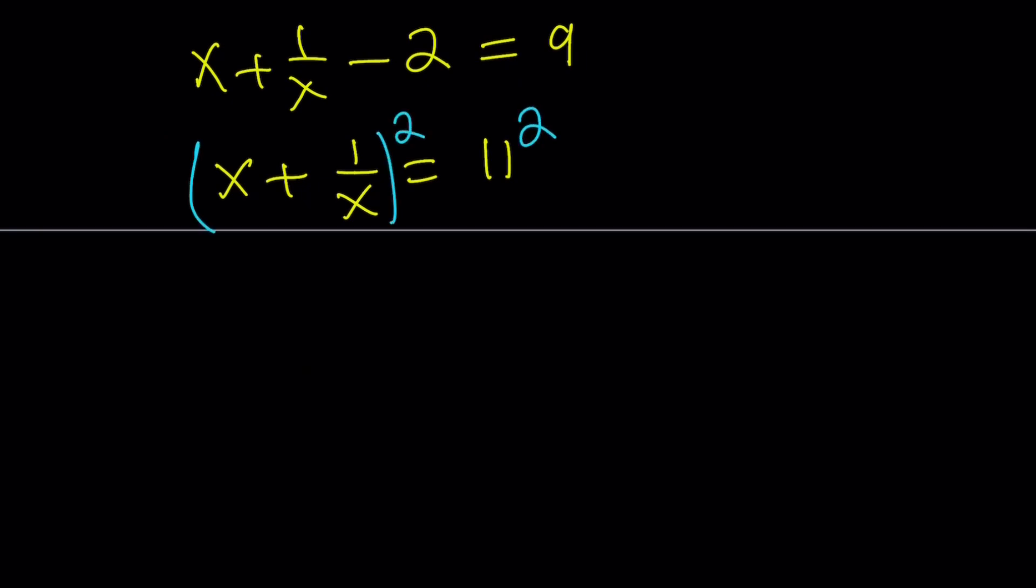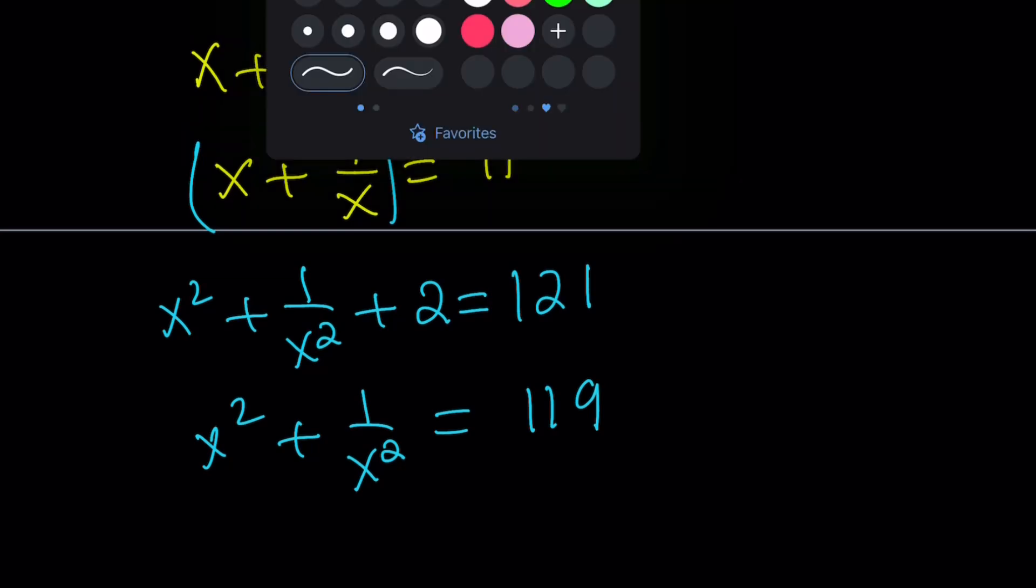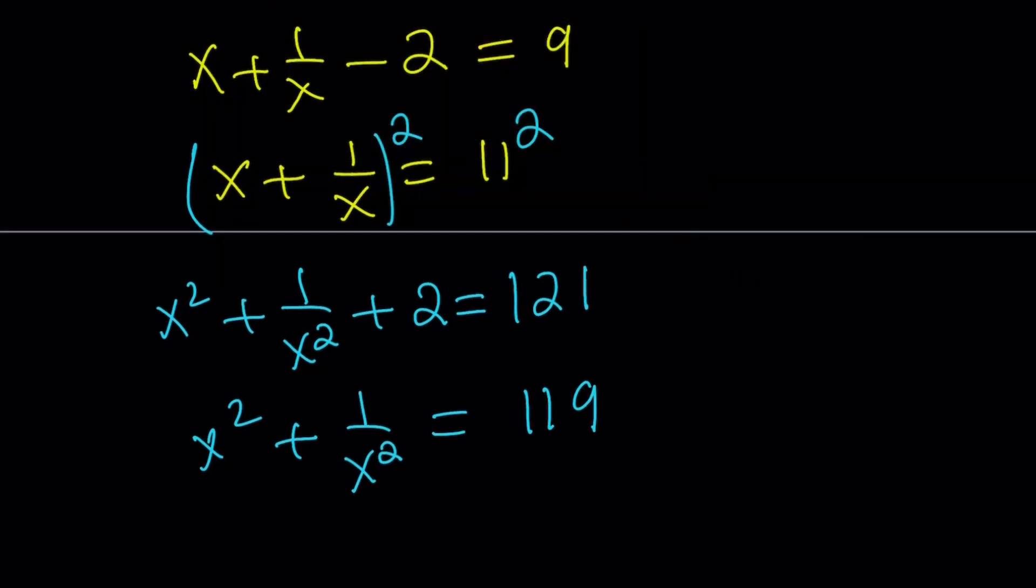And that gives me the following. Same method, same thing. 11 squared is equal to 121. Subtract 2 from both sides. Surprise, we get the same answer. Shouldn't be a surprise, right? So we got the same answer, which is really cool. And this brings us to the end of this video.